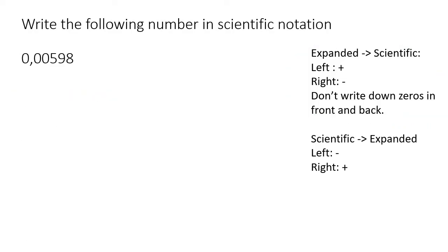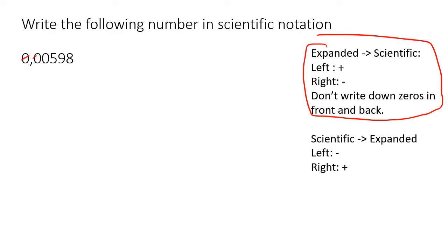Next example, going from expanded to scientific. Any zeros in the front? Yes. So we won't write those out. Any zeros at the back? No. Start with the first number after the zeros — that's 5 — put a comma, then put all the numbers after it. Say times 10. The comma was originally there, now it is here — we moved it three places to the right. Right means negative, so you put negative 3.